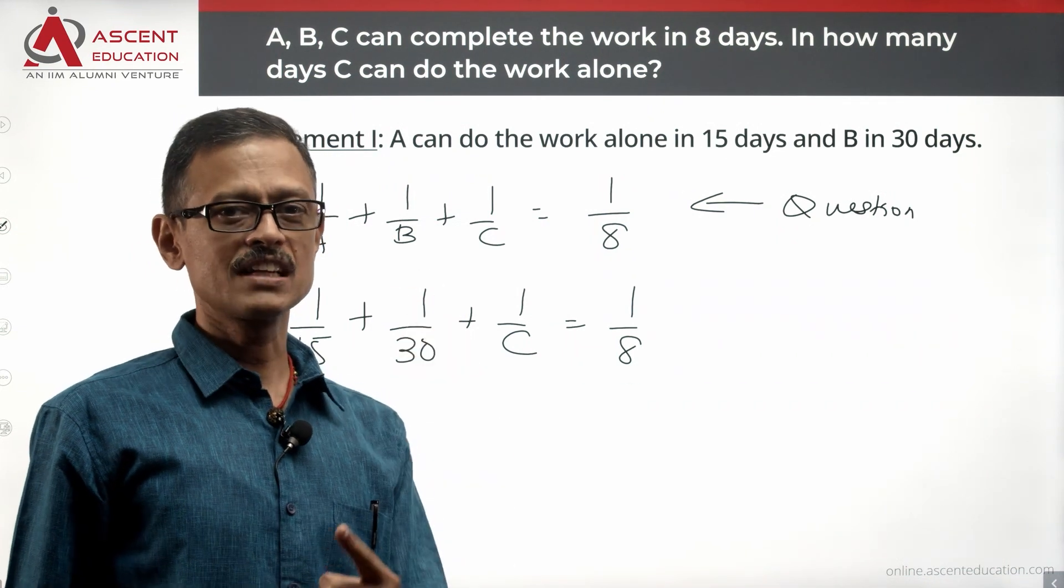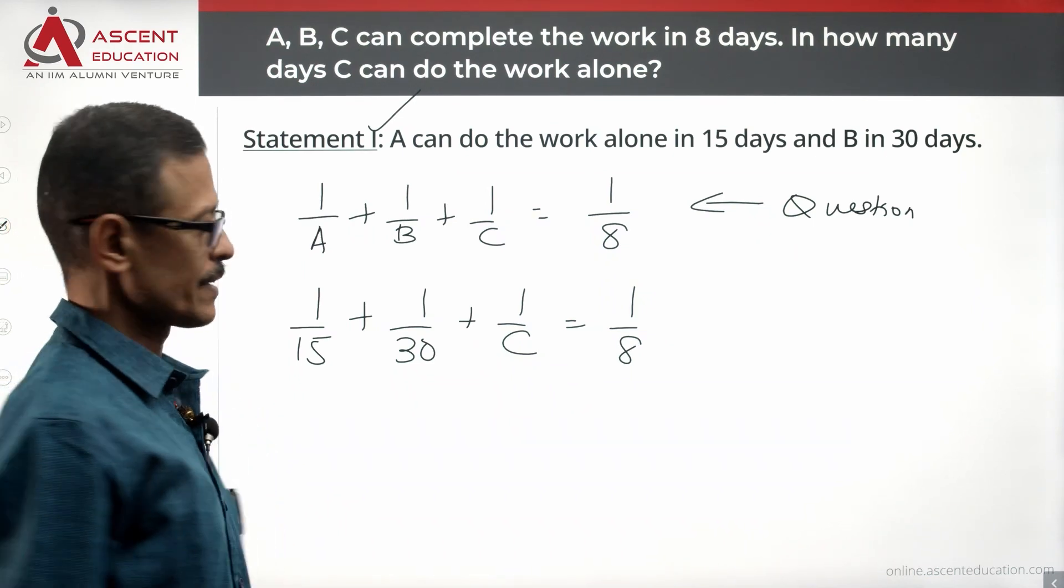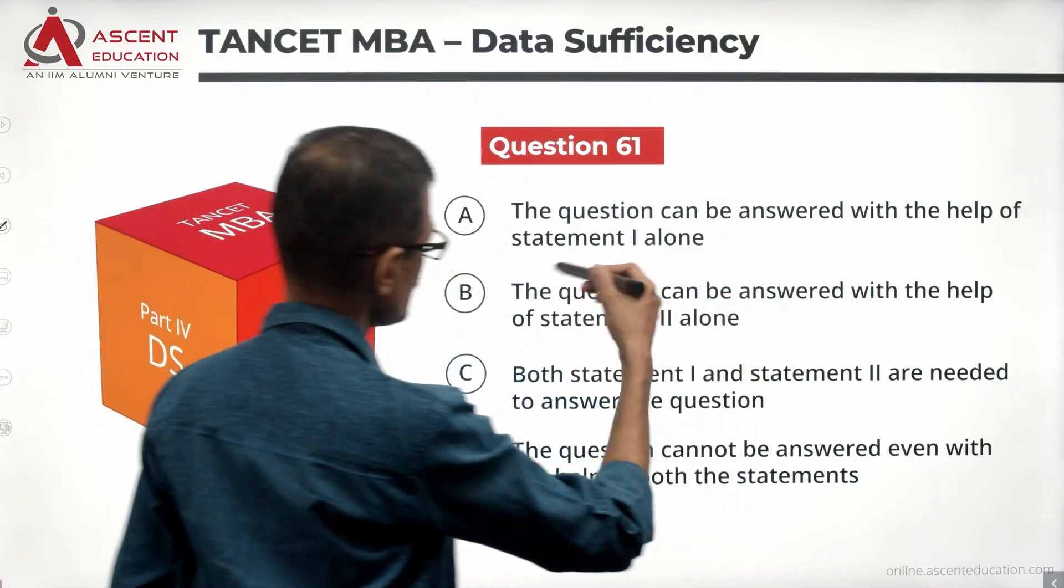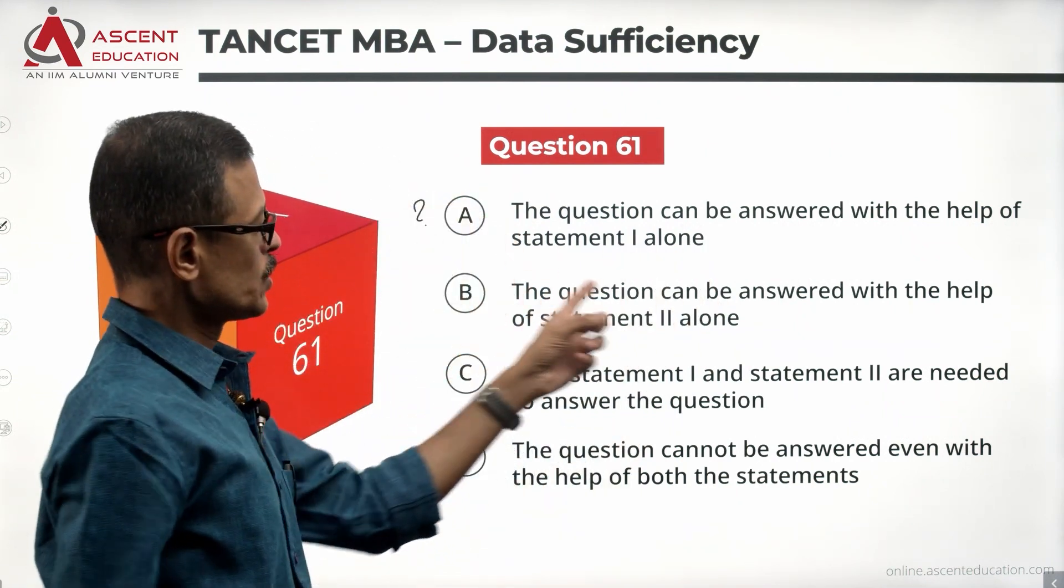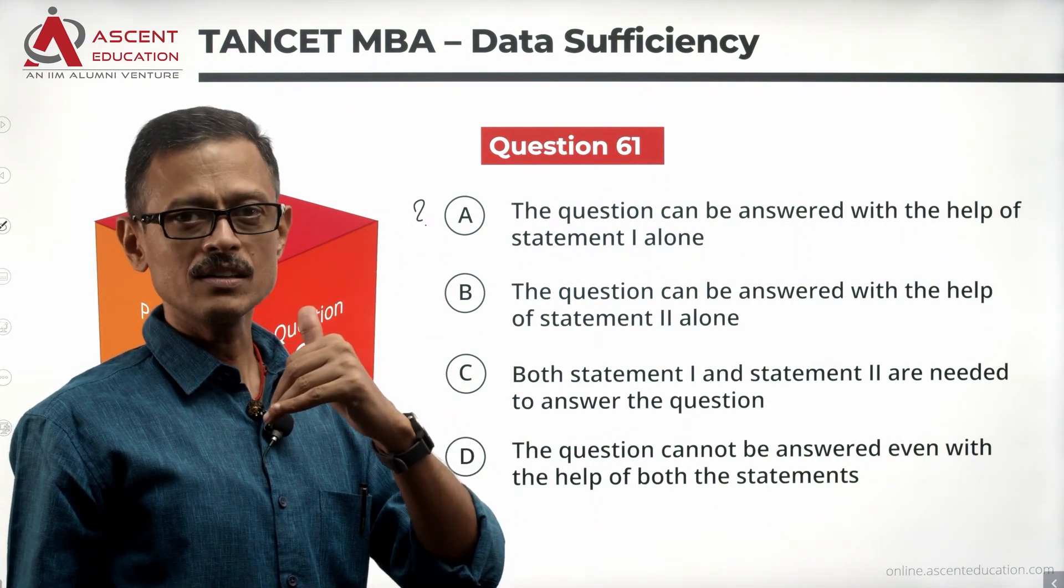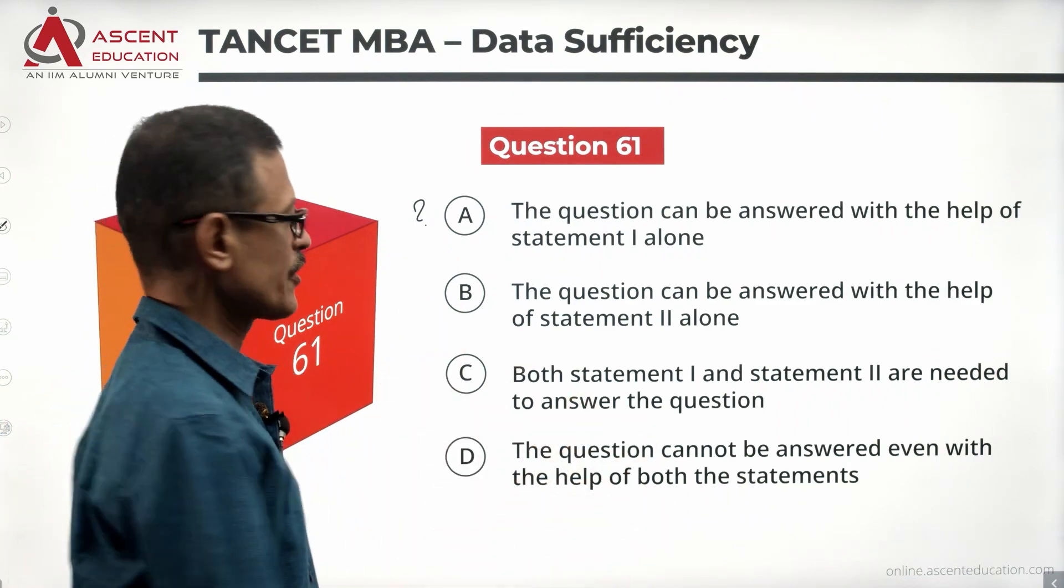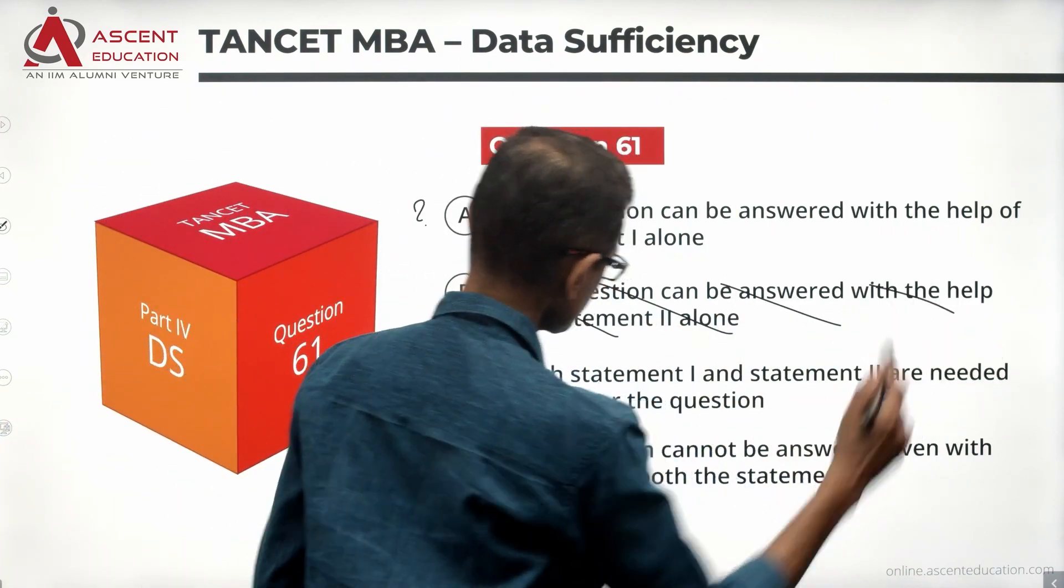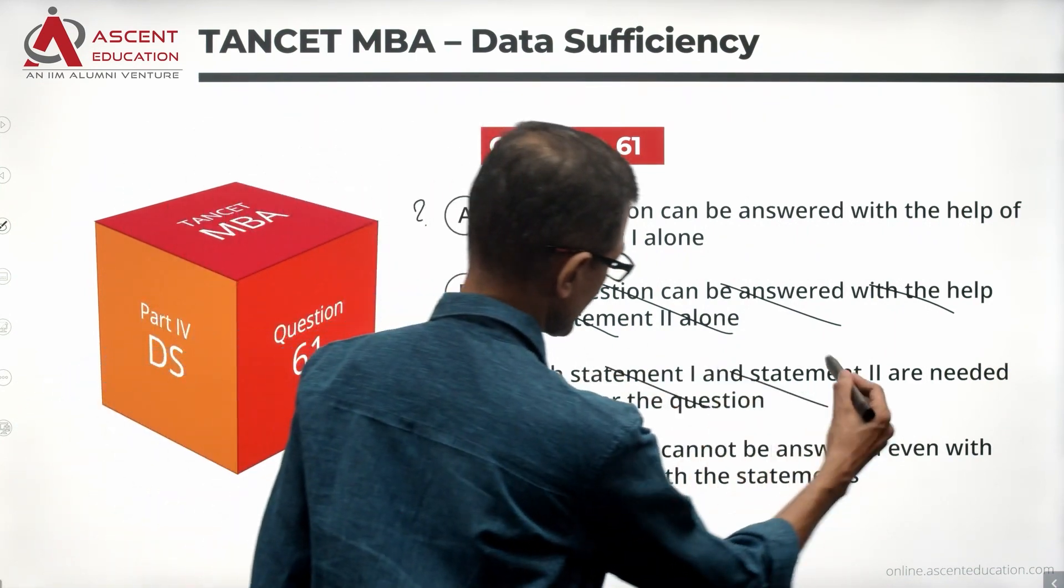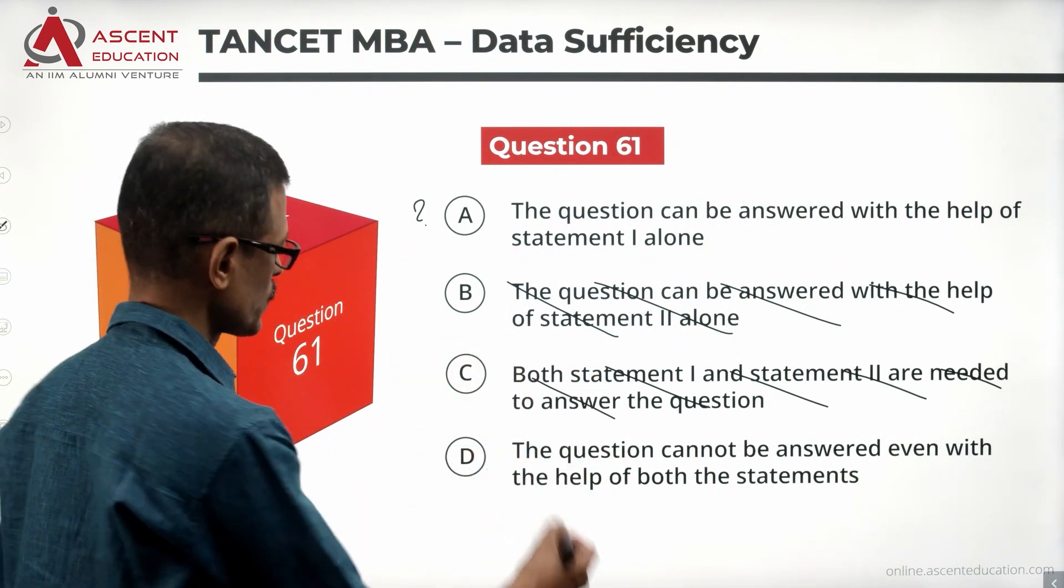So we can essentially say statement 1 alone is sufficient to find the answer. That's the answer. 2 alone is not needed. We have 1 alone, so it's either each statement independently or 2 alone possibility is ruled out. 1 is sufficient, so B can be ruled out. Both statements are required, 1 alone is sufficient, so that can also be ruled out. Finally, the question cannot be answered is also ruled out. We have been able to answer the question using statement 1.